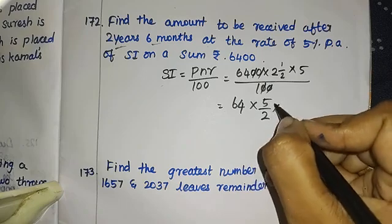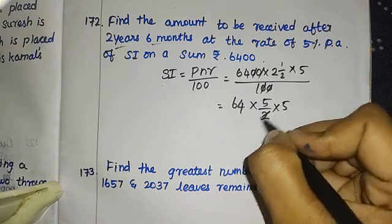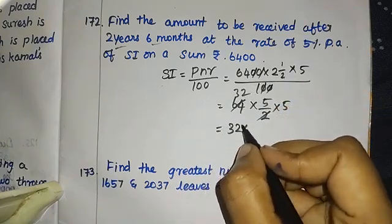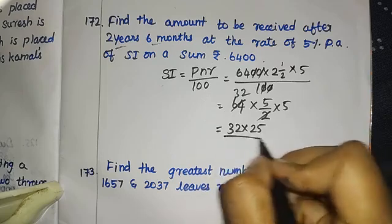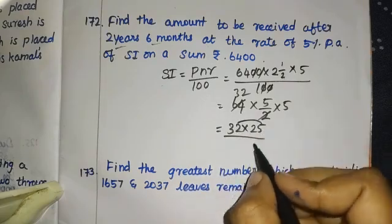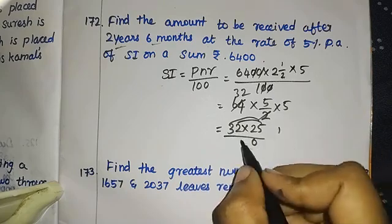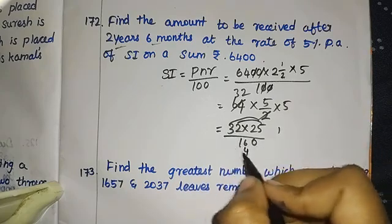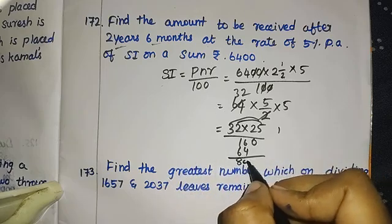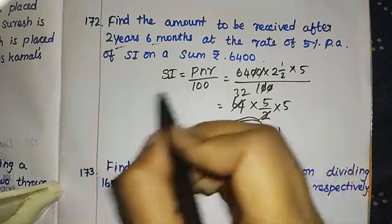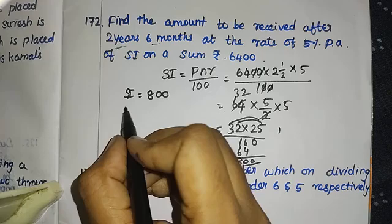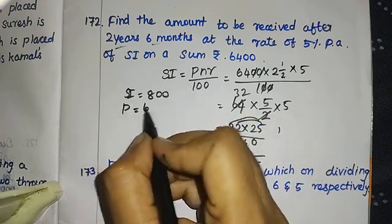Simplifying: 6400 with cancellation gives 64, then two twos are four, four plus one gives five, so five by two into five. Further simplification: 32 into five gives 160, and continuing the multiplication — five tens are fifty, five fives are twenty-five — so the simple interest comes out to eight hundred rupees.